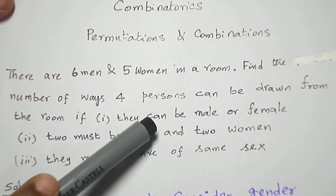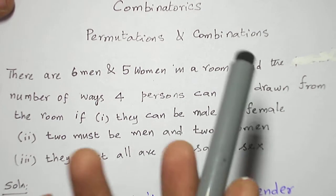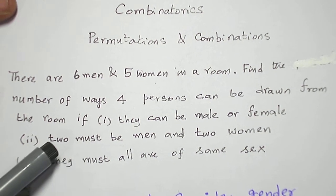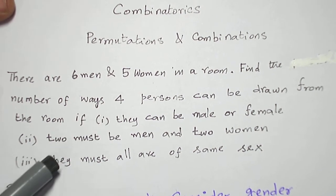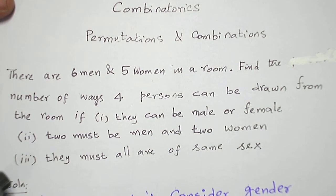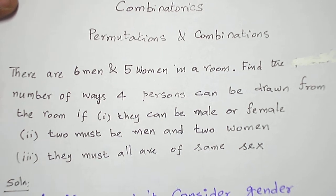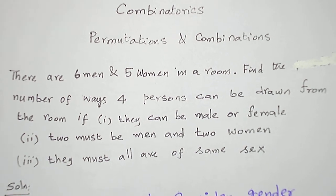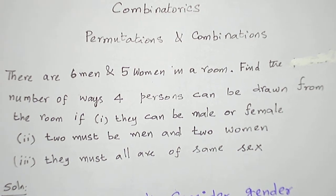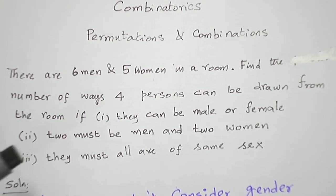The first condition is they can be of either sex, male or female. The second condition is out of these four persons, two must be men and two must be women. The third condition is they must all be of the same sex, either all four are men or all four are women.